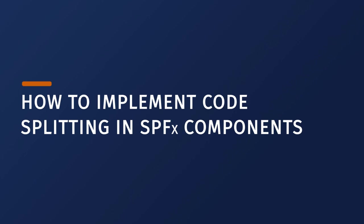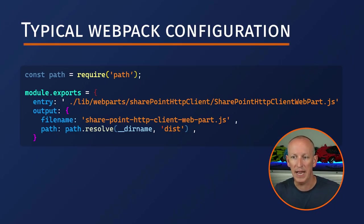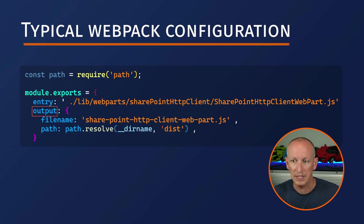There are two ways to implement code splitting in your SharePoint Framework project. The first is to modify the Webpack configuration object that the SharePoint Framework build toolchain creates when you run the gulp bundle command. The Webpack configuration object includes an entry object that specifies where Webpack should start when creating the bundle. Normally it looks like what you see here — an entry point pointing to a JavaScript file generated from the gulp build process, and an output that tells it what file name to create and where.